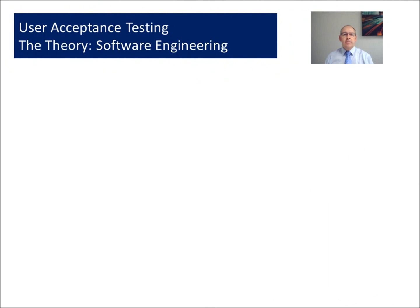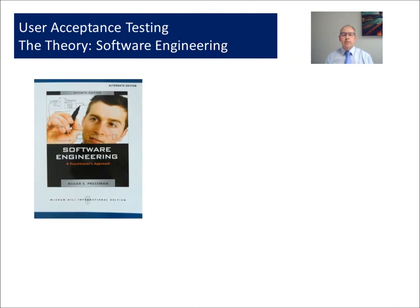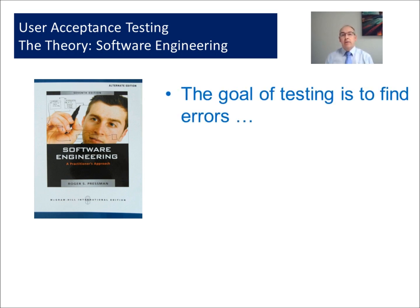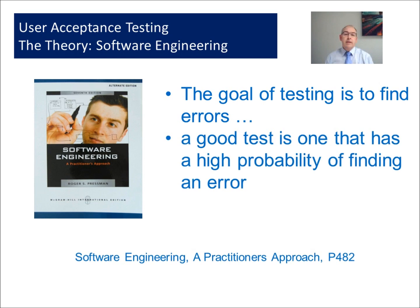First let's look at the theory of testing. In Roger Pressman's book, Software Engineering: A Practitioner's Approach, there are a number of sections on testing. We'll identify two points here. The first is that the goal of testing is to find errors — not to prove that it works, but to find areas that it doesn't work. The second is that a good test has a high probability of finding an error. So we want to look at our system and see if we can find areas where it needs reconfiguration and rework.